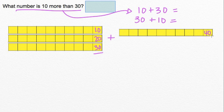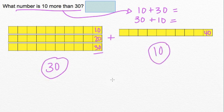Because we're counting by 10s, we have 30 here, and then we have 10 here. So if we're counting by 10s, we know that after 30 comes 40.